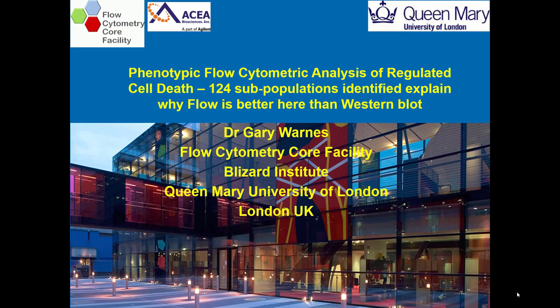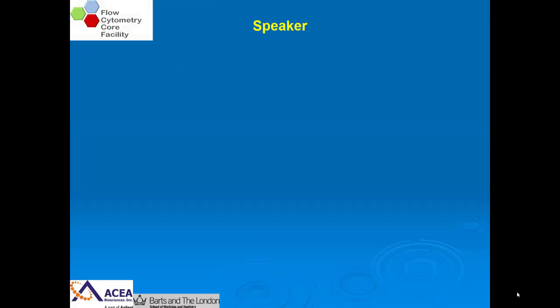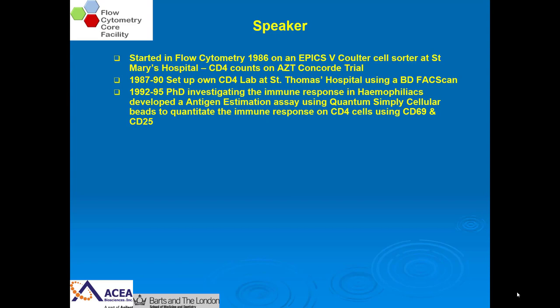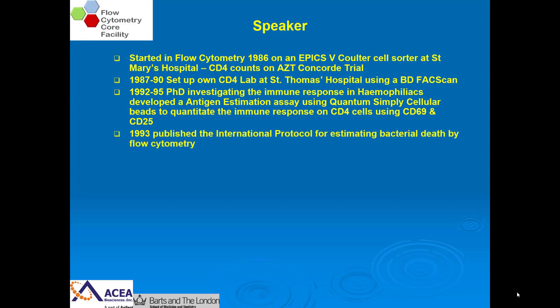Hello, welcome to the ACEA webinar. My name is Dr. Gary Warnes. I will be talking today about regulated cell death and how this can be measured flow cytometrically — we can identify up to 124 populations and discuss why this is better than Western blot. I started working in flow cytometry in 1986 at St. Mary's Hospital, counting CD4 cells on an EPICS-5 cell sorter. I then set up my own laboratory at St. Thomas's Hospital using one of the first BD FACScan instruments.